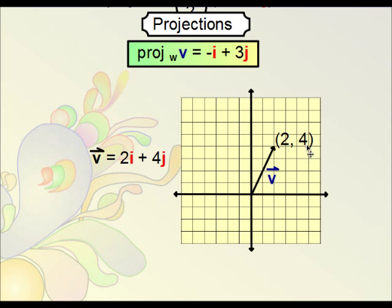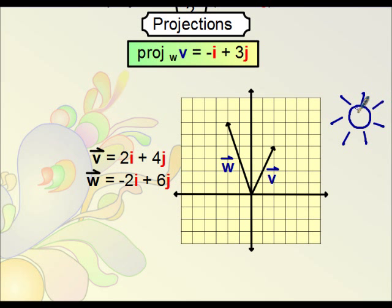To give you an idea of what we're talking about visually, this is what it is. Here's vector V where the arrowhead's pointing at 2, 4. So originally it was 2i plus 4j. And then here's vector W, arrowhead located at negative 2, 6. Since V is being projected onto W, it's almost as if the sunlight's coming from over here. That means that the shadow being cast would essentially get up to about this point right here. So that was our projection, negative i plus 3j, where the coordinate here is located at negative 1, 3.